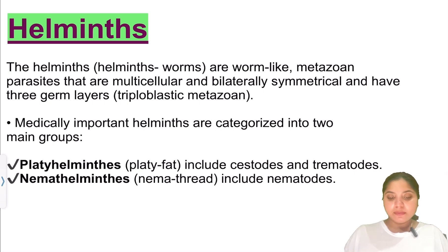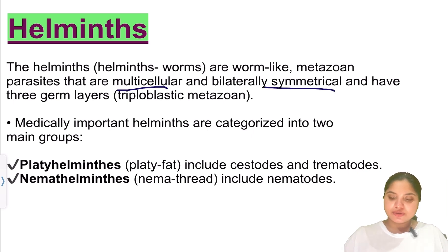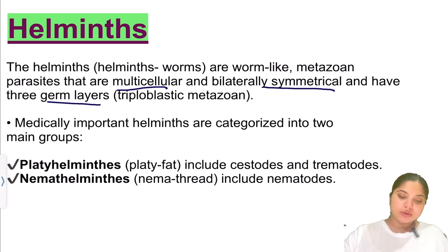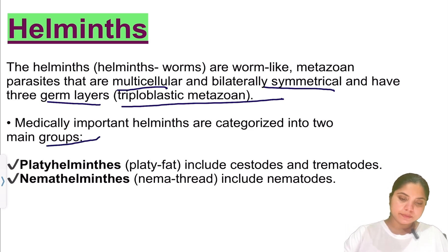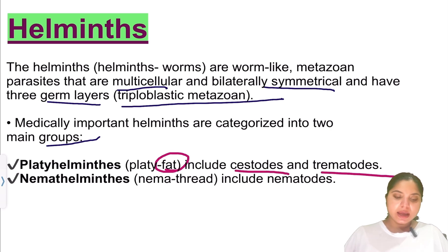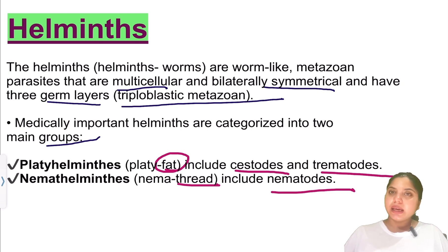Regarding helminths: helminths are worm-like metazoa parasites that are multicellular, bilaterally symmetrical, and have three germ layers, hence they are triploblastic metazoa. Medically important helminths are categorized into two main groups: Platyhelminthes (flat worms), which include cestodes and trematodes; and Nematodes (thread-like), which include round worms. A detailed study of these will be covered in a next video.